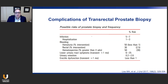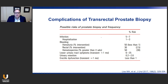So why are we talking about transperineal prostate biopsy? The reason is because transrectal prostate biopsy, which is currently the most commonly performed method, is associated with a number of significant complications. A review article from the American Urological Association reported an infectious complication rate of approximately 5% to 7%. Nearly half of these patients will be hospitalized with sepsis and require IV antibiotics, and a subset will even succumb to their infection and die.